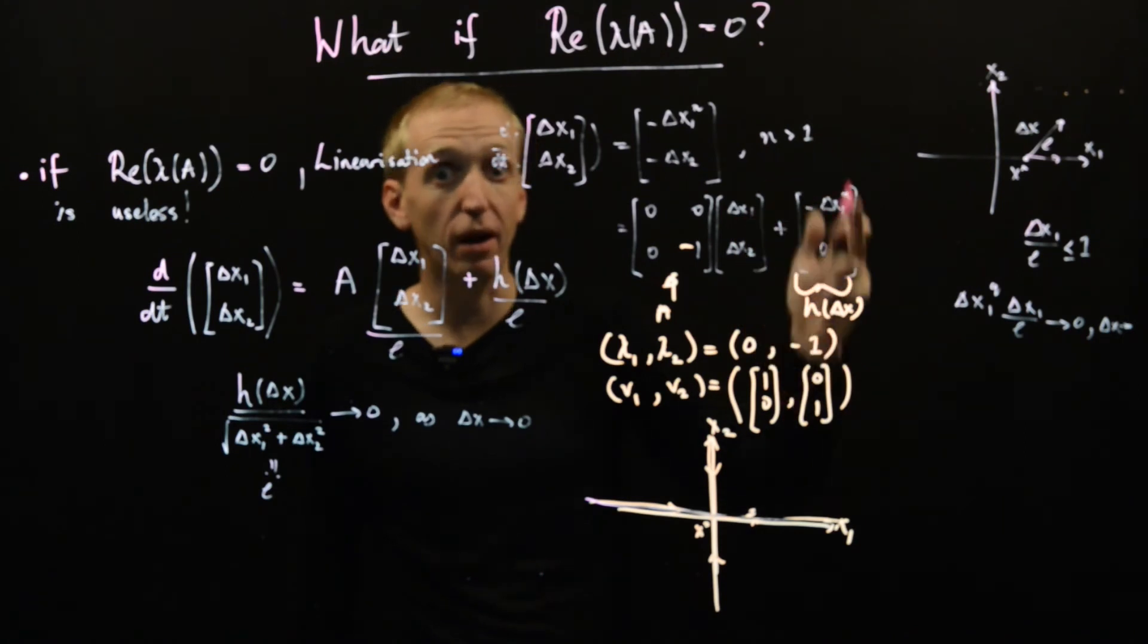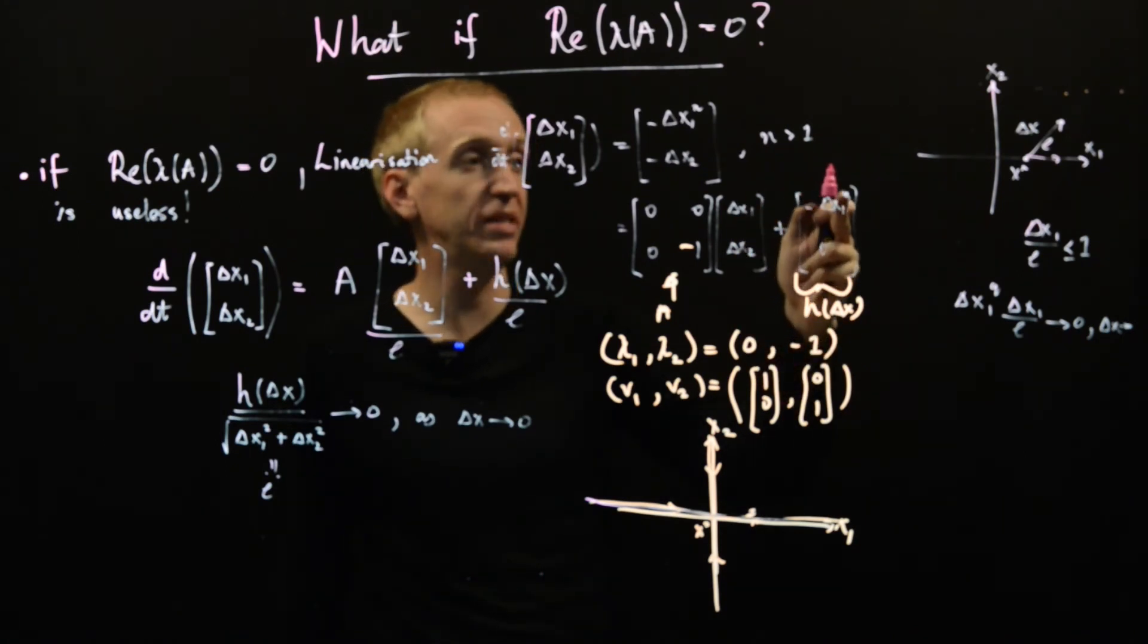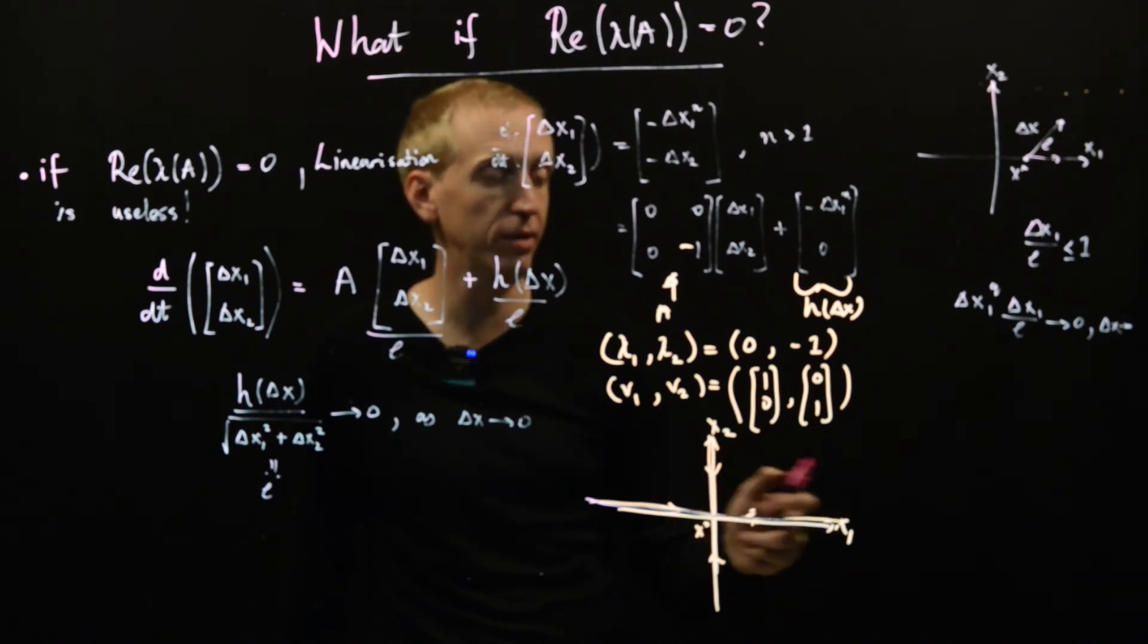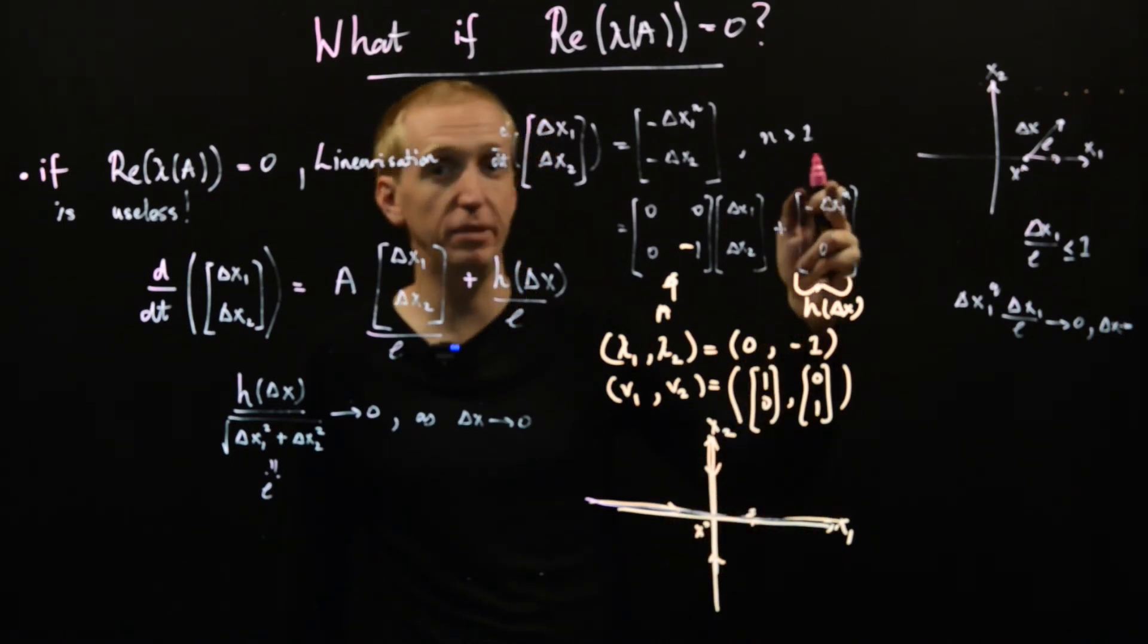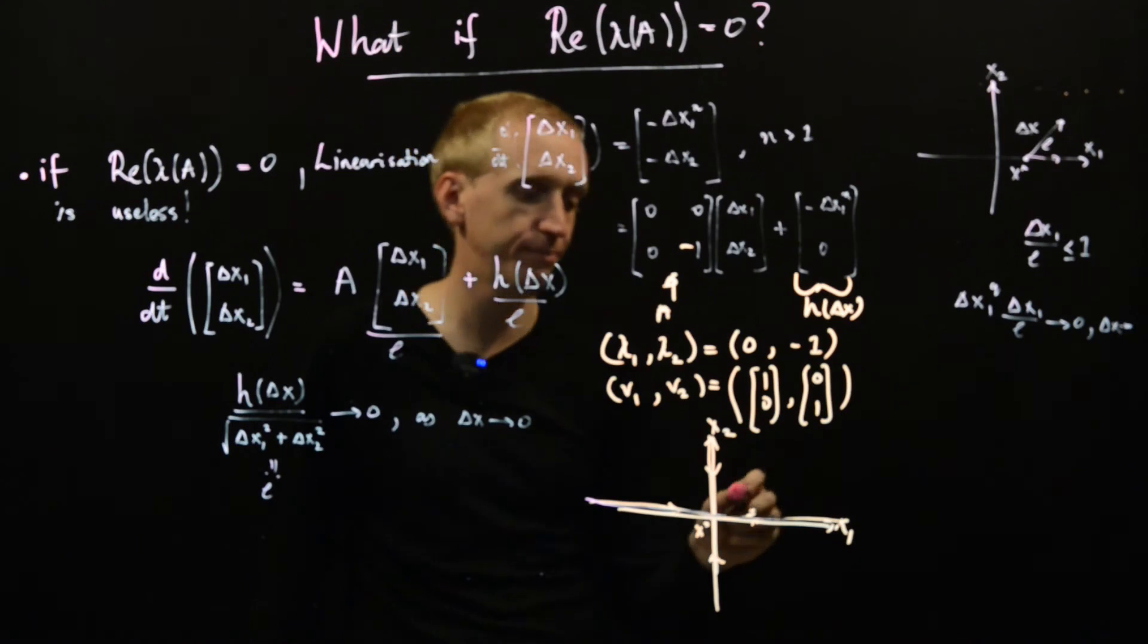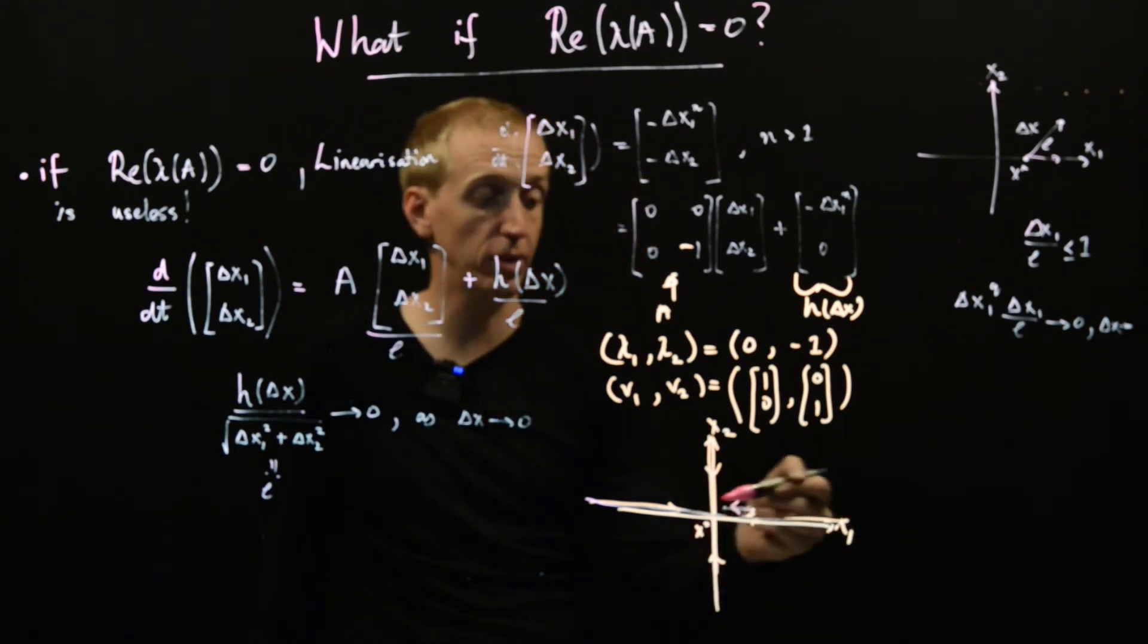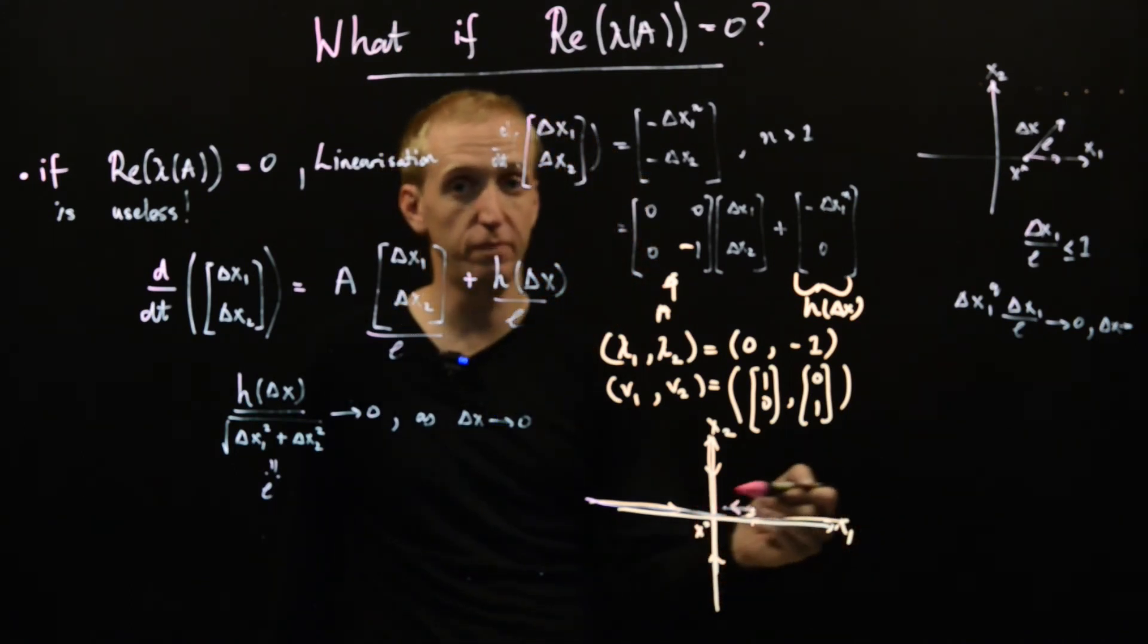So in particular, if we... Well, for positive values of x1, it doesn't matter, this will always be positive, so this will be negative. So our higher order terms would tell us that we're getting pushed in this way, for values in the direction of this eigenvector.